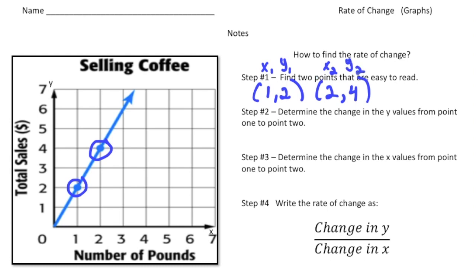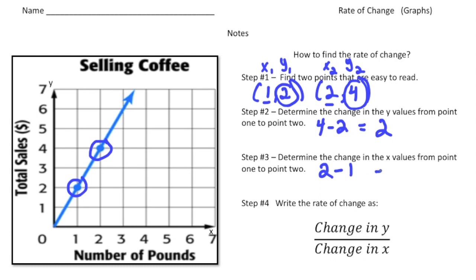Step two: determine the change in the Y values from point one to point two. We have four for the second Y value and two for the first Y value, so four take away two gives us two. Step three: determine the change in the X values — point two has X equals two, point one has X equals one, so two minus one is one. Step four: write the rate of change as the change in Y over the change in X — that's two over one. So for every one pound of coffee, total sales increases by two dollars.